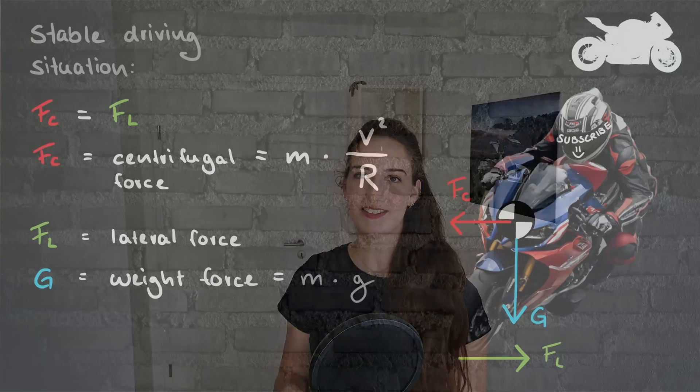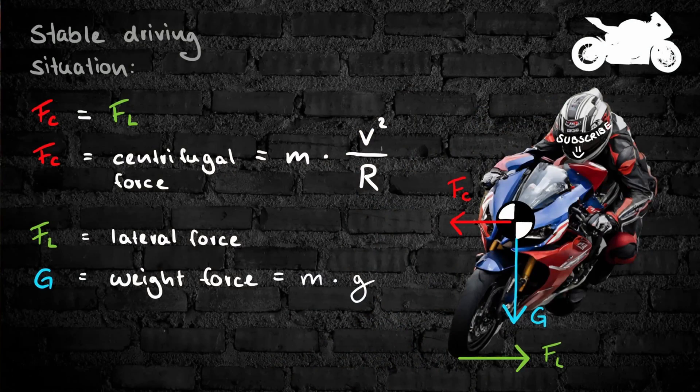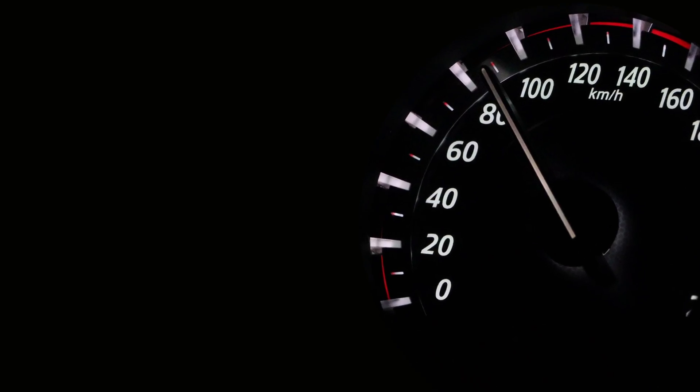Now let's get back to the centrifugal force and the lateral force. Fc is the force that arises when moving around a given curve with a given mass and velocity. You can feel this force when cornering — it's the outward force trying to fling you away from the center of the turn. Fc depends on the motorcycle's mass, the velocity, and the radius of the turn. Since we've got a stable driving situation, there has to be a force holding against the centrifugal force, with the same amount but pointing in the opposite direction. It's called the lateral force, which is transferred by the tire.